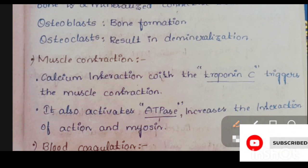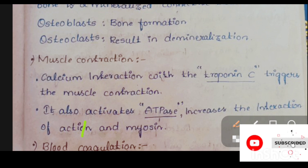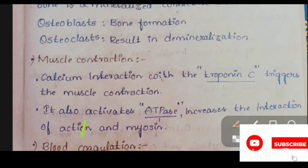The second function of calcium is muscle contraction. Calcium interaction with troponin C triggers muscle contraction. It also activates ATPase and increases the interaction of actin and myosin, which are muscle proteins containing troponin C. When actin and myosin interact, muscle movement occurs. So calcium plays a vital role in muscle contraction by triggering troponin C and activating ATPase.